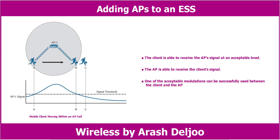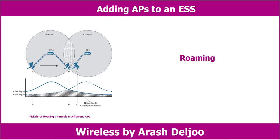Other APs can be added so that the client can move within a larger area. However, the APs must be carefully deployed to allow the client to roam from one AP to another. Roaming is the process of moving an association from one AP to the next so that the wireless connection is maintained as the client moves. In this figure, a new AP has been added alongside AP1, each using the same channel.